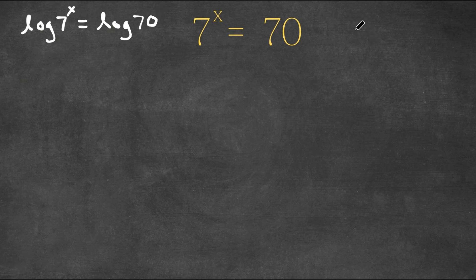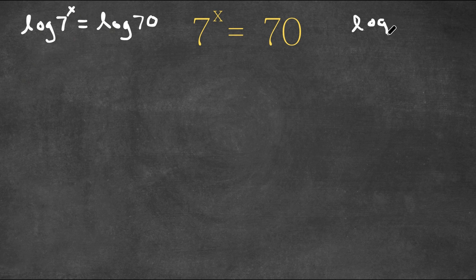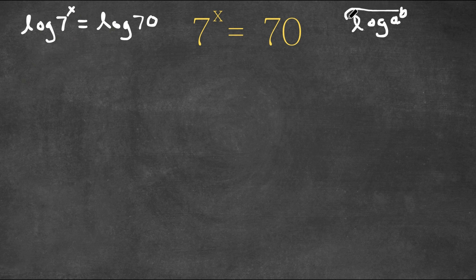Now if we have a logarithm in the form log a to the power of b, the power property of logarithms states that I can actually move this exponent b to the front of the logarithm. This would equal b times log a.